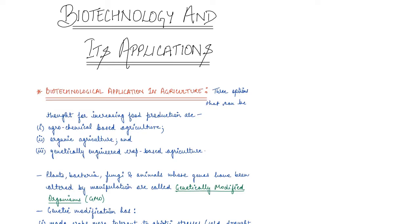Hey guys, welcome back to Unstop Biology. Today we are going to start off with a new chapter — chapter 12 of Class 12th NCERT. This chapter is all about the applications of biotechnology. In the last video we discussed what are the processes of biotechnology, what is recombinant DNA technology, how do we do it, what are the tools required, and then we studied that with the help of biotechnology we can have products at industrial scale.